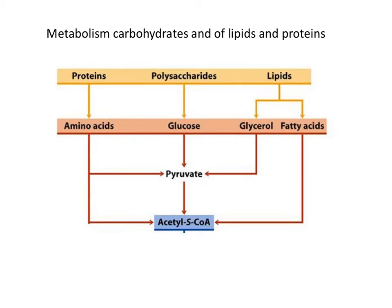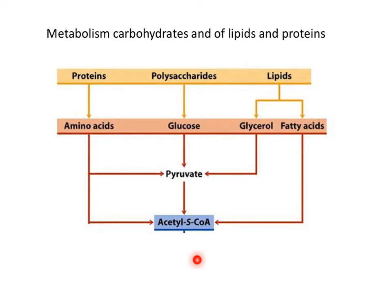In the previous videos, we discussed the metabolism of glucose. Glucose can be transformed into pyruvate, which can further get oxidized to form acetyl-coenzyme A. Pyruvate and acetyl-coenzyme A are common motifs for the metabolism of proteins, polysaccharides, and lipids. In this video, we will be discussing the hydrolysis of lipids to form glycerol and fatty acids. These fatty acids will undergo oxidation to produce two-unit molecules of acetyl-coenzyme A that can enter the citric acid cycle.